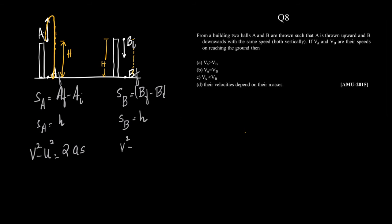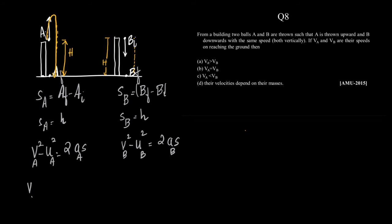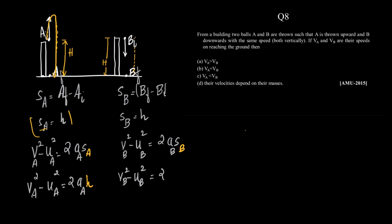Now let us write down the equations. We know that v² - u² = 2as. So: v_a² - u_a² = 2 × a_a × s_a, where s_a = h. And similarly: v_b² - u_b² = 2 × a_b × s_b, where s_b = h.